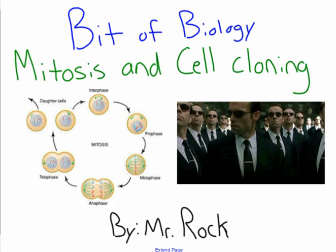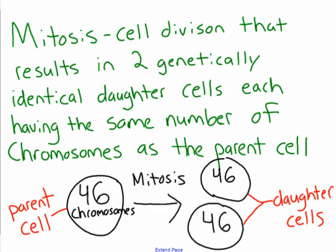This is a bit of biology with Mr. Ruck. Today we are going to be talking about mitosis and cell cloning. What mitosis essentially is, it is cell division that results in two genetically identical daughter cells. So it is ideally cloning — you're taking one cell and from that one cell you're going to make two cells that are genetically identical.